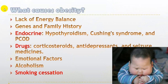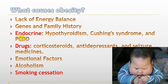The main cause is more intake of calories and less utilization — an imbalance between input and output. Genetic and family history is the second common factor. Endocrine causes include hypothyroidism, Cushing's syndrome, and PCOS in females. Drugs such as glucocorticoids, anti-depressants, and anti-epileptic drugs are known to produce obesity.